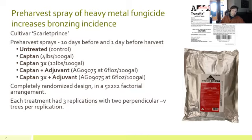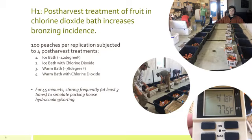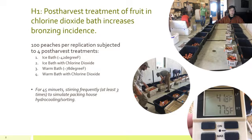Trees were grown and managed as directed in the 2019 Southeastern Peach, Nectarine, and Plum Pest Management and Culture Guide. After fruit was mature and harvested, 100 fruit from each treatment was taken to the back room at the Musser Fruit Research Center and subjected to a makeshift hydrocooling line. We had four different post-harvest treatments: an ice bath, an ice bath with chlorine dioxide, a warm bath, and a warm bath with chlorine dioxide. Each pre-harvest spray treatment was split into the four post-harvest treatments and placed in bath waters for 45 minutes, stirred frequently, then moved to cold storage for seven days, and then to room temperature for two more days before we evaluated for bronzing incidence and severity.